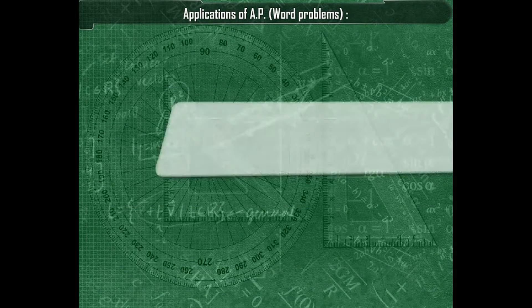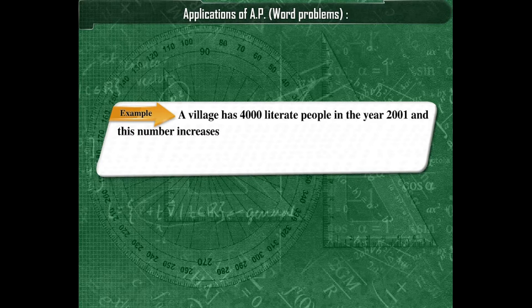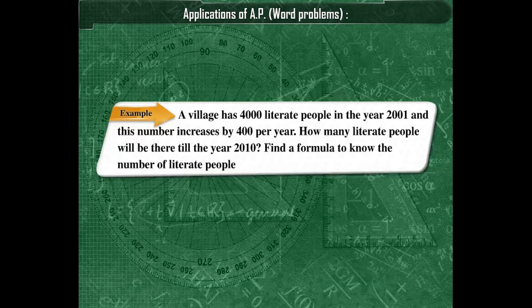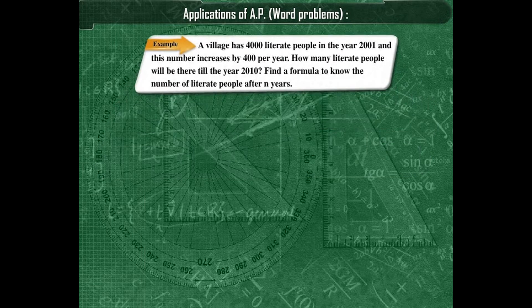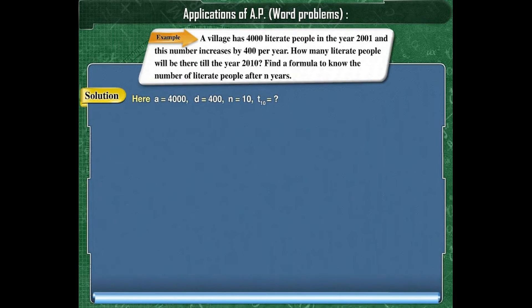Let us solve another question. A village has 4,000 literate people in the year 2001, and this number increases by 400 per year. How many literate people will there be till the year 2010? Find a formula to know the number of literate people after N years. Here A is 4,000, D is 400, and N is 10. We have to find T10.